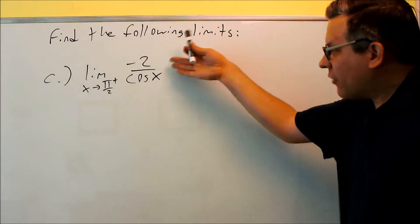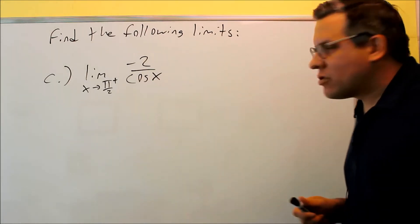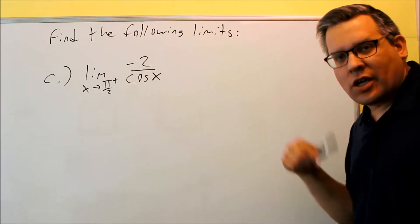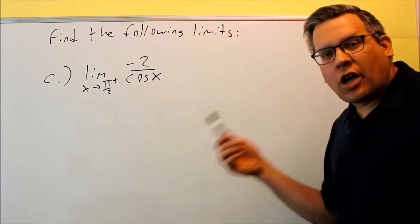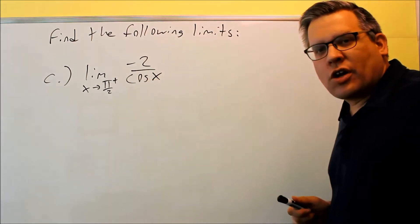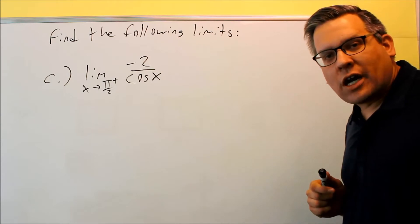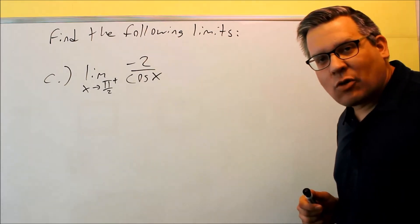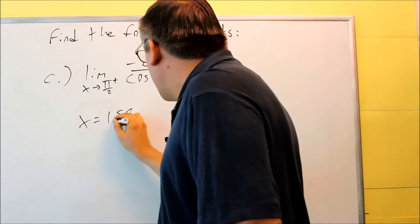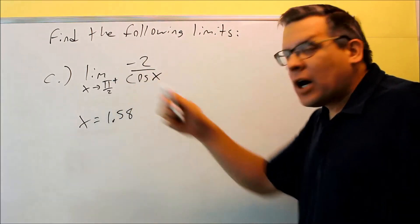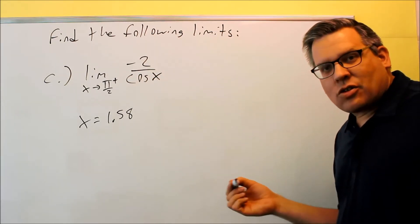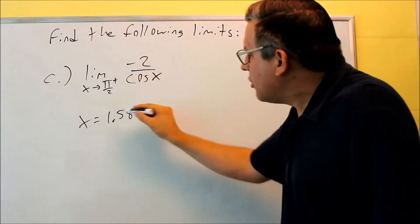For part c, we have one that involves trig. You're approaching π/2 from the positive side. If I put π/2 in and do cosine(π/2), that gives me zero — so once again, I have a case where I'm dividing by zero. I want to pick a test number. You need to know what decimal π/2 is: put π/2 into your calculator and you get approximately 1.57. So I want to pick something just slightly larger than 1.57. I'm going to use 1.58. It's got to be larger because of the plus sign — if it were a minus sign, I'd use 1.56 for the left-hand side. But on the positive side, I'll use 1.58.